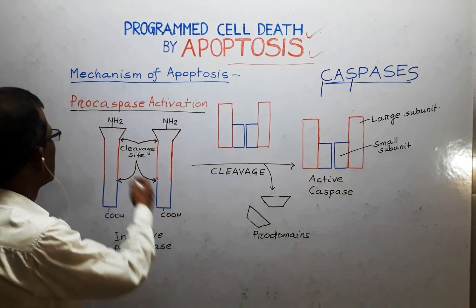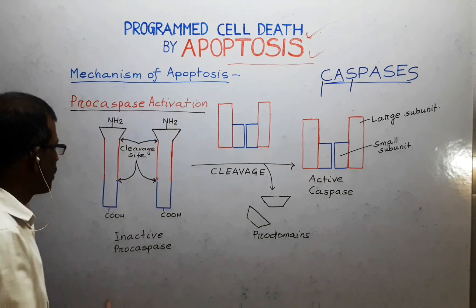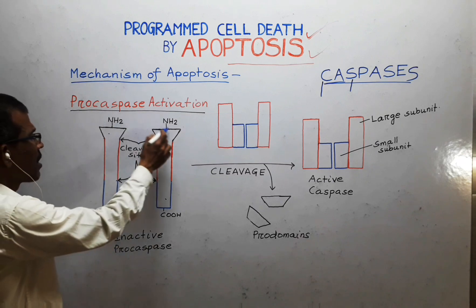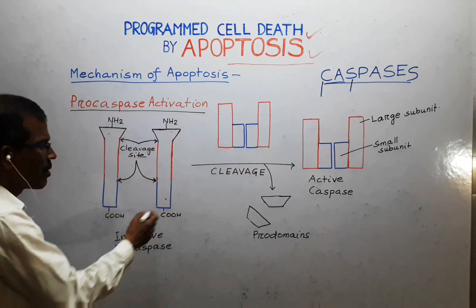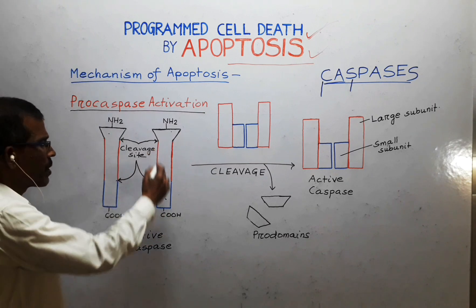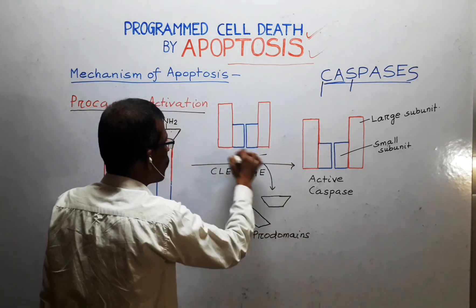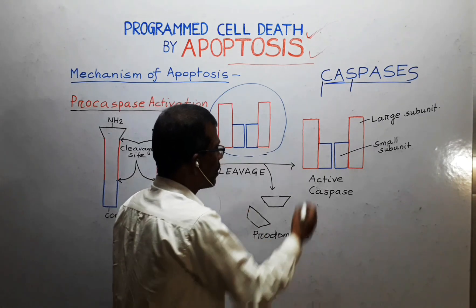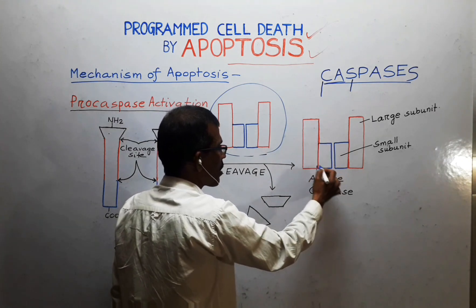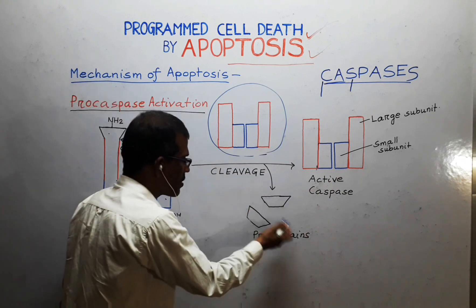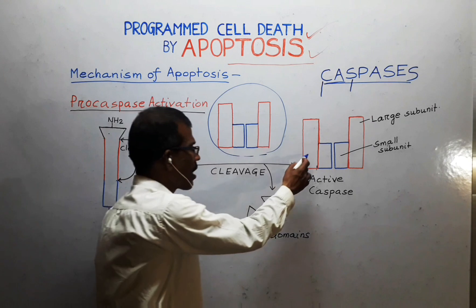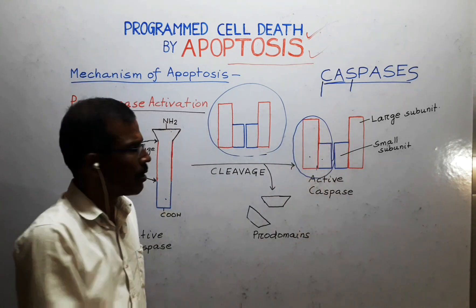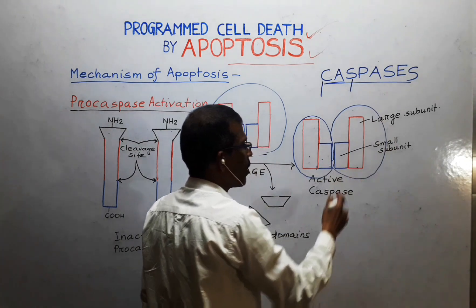This figure explains the activation of Procaspase. Shown here are two molecules of Procaspase with their Pro domains, amino terminals, and carboxyl terminals. These Procaspase molecules are cleaved by already-active caspases into a large subunit and a small subunit. The Pro domains are removed, and the large and small subunits together form a heterodimer. Two such heterodimers assemble to form an active tetramer.